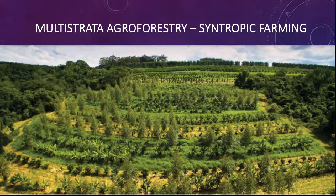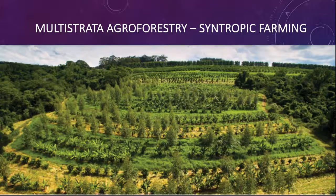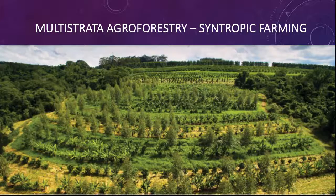Having non-monocultural systems such as multistrata agroforestry and syntropic farming is the way to go. Increasing biodiversity in soils by having biodiversity of plants, and making our farmlands into forests — basically farming within forests.